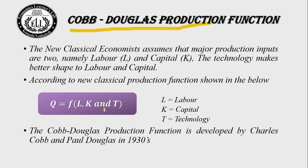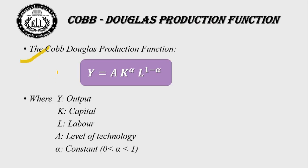According to the new classical production function, Q is a function of labor (L), capital (K), and technology (T). Labor, capital, and technology are independent variables and Q is the dependent variable. The Cobb-Douglas production function was developed by Charles Cobb and Paul Douglas in the 1930s.